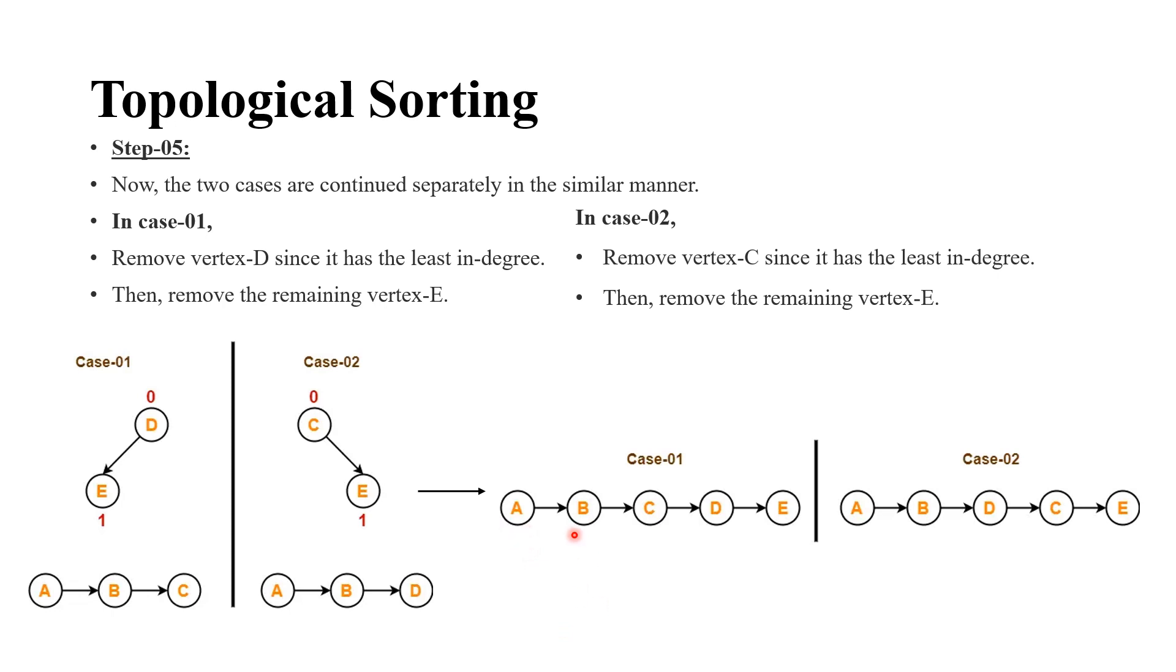So, we have for case 1, A, B, C, D, E as the ordering and for case 2, we have A, B, D, C, E as the ordering.